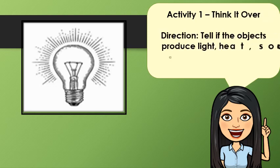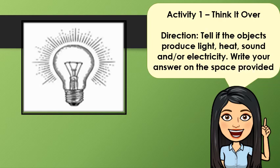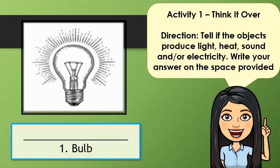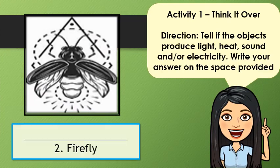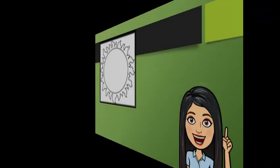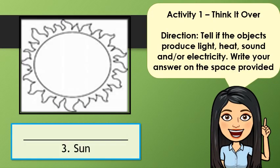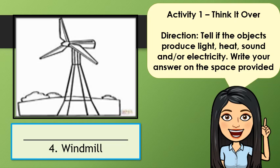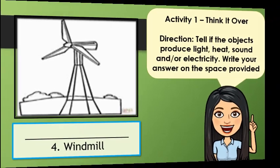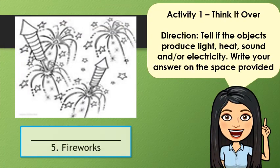Activity 1: Think It Over. Tell if the objects produce light, heat, sound, or electricity. Write your answer on the space provided. Number 1: bulb. Number 2: firefly. Number 3. Number 4. Number 5: fireworks.